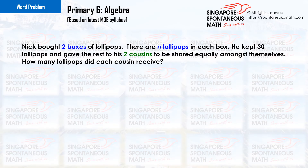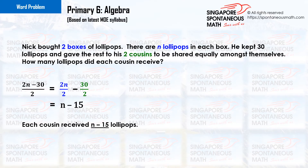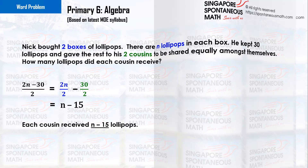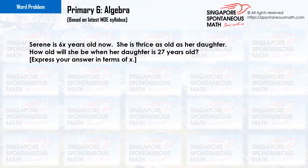How many lollipops did each cousin receive? Serene is 6x years old now. She is thrice as old as her daughter. How old will she be when her daughter is 27 years old? Express your answer in terms of x.